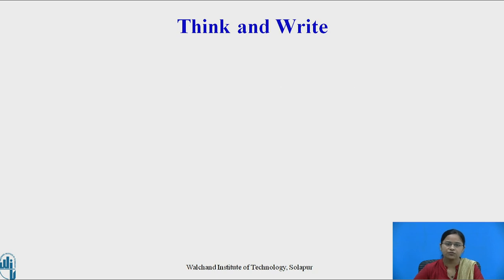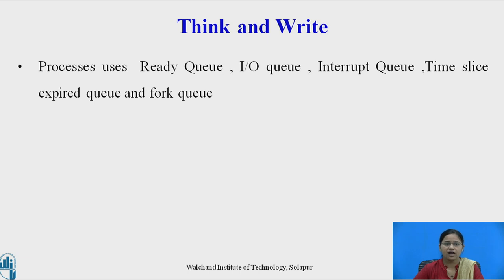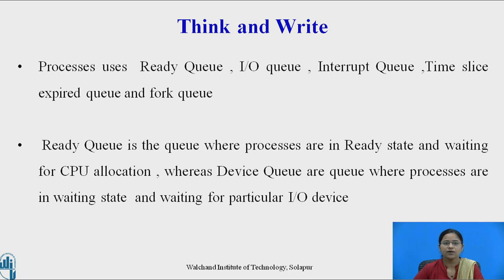There are two types of queues present in the system: ready queue and device queue. Processes use the ready queue along with the IO queue, interrupt queue, time slice expire queue, and fork queue. The ready queue is where processes are in the ready state and waiting for CPU allocation, whereas device queues are where processes are in the waiting state and waiting for a particular IO event.